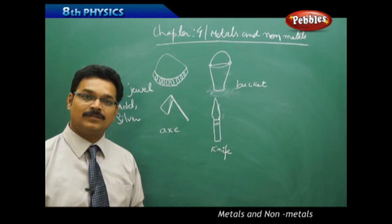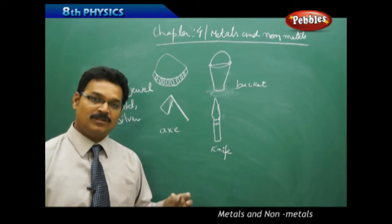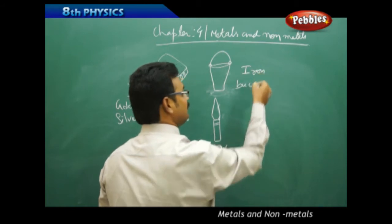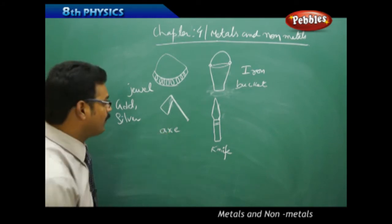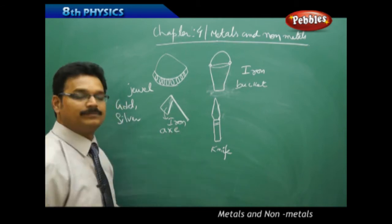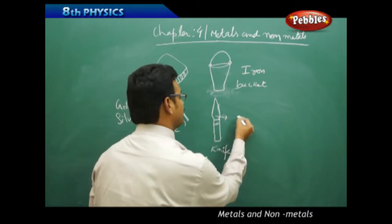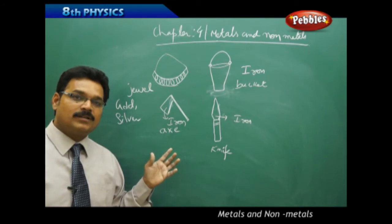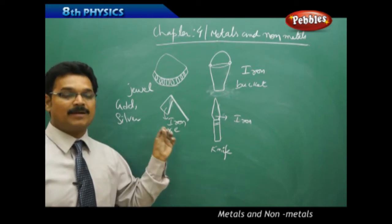This is a bucket. Of course, today you are seeing buckets made of plastic material, but in ancient times, people used to use metal buckets, especially iron. You see this axe - this part is also made of iron. And this knife - this is also made of different metals, different types of iron. So if you see all these objects, iron, gold, and silver are involved, and all these are nothing but metals.